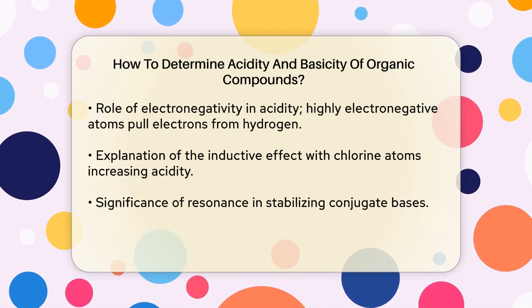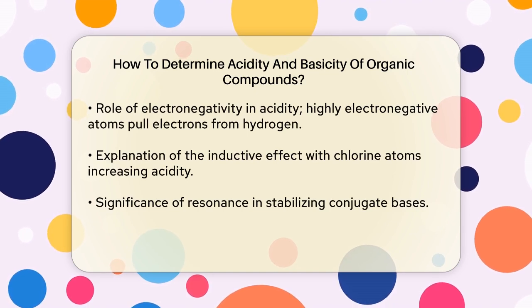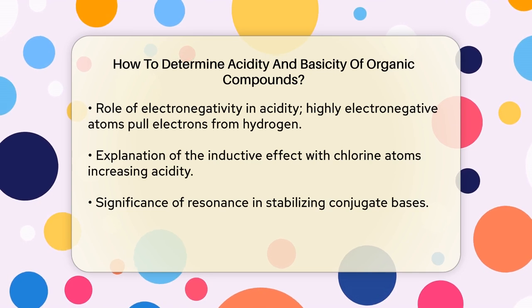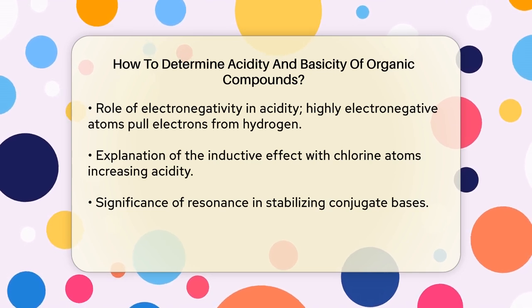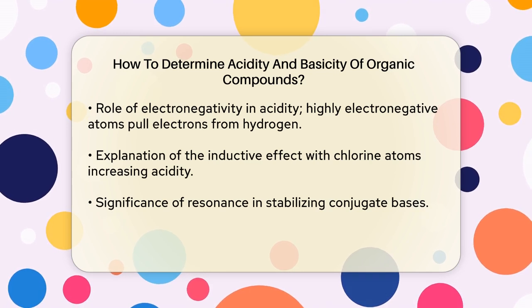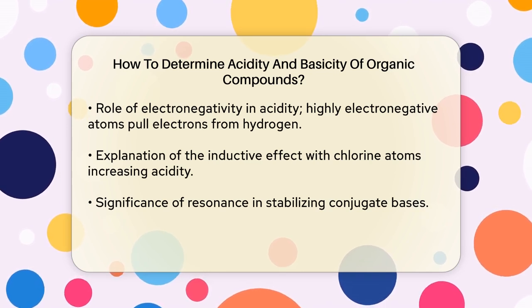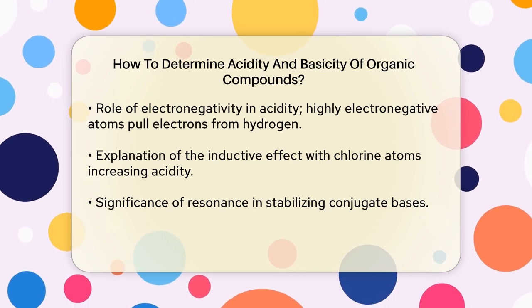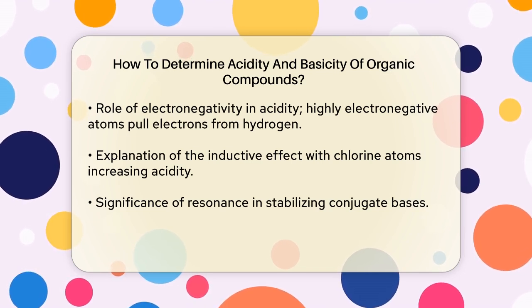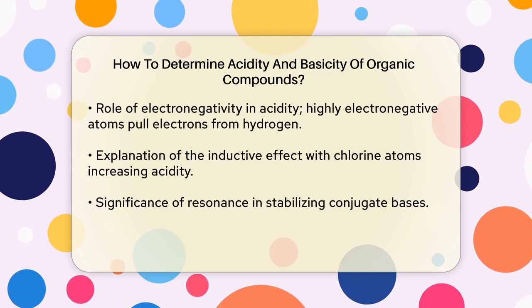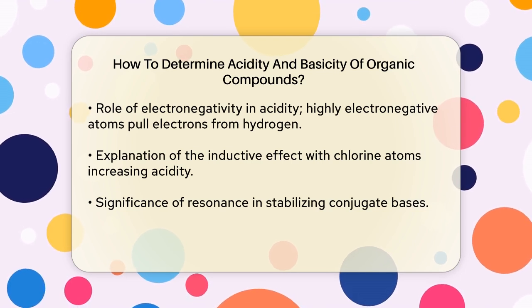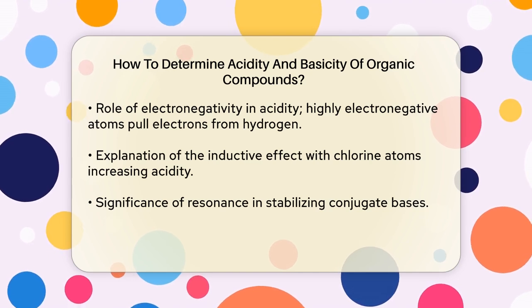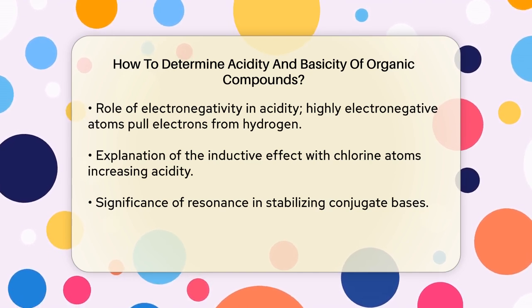Electronegativity and the inductive effect. Electronegativity plays a big role here. When an atom in a molecule is highly electronegative, like chlorine or oxygen, it pulls electrons away from the hydrogen atoms, making it easier for those hydrogens to be released as protons. This is known as the inductive effect. For instance, if you have a molecule with three chlorine atoms attached to a carbon, it will be more acidic than a similar molecule with only one chlorine atom, because the three chlorines pull more electrons away from the hydrogen, stabilizing the conjugate base.